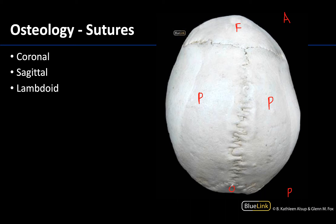Now where these bones meet, you will have joints, and these joints are referred to as sutures. The first suture we will discuss is the coronal suture, which is sometimes referred to as the frontal suture. It's going to be the meeting point between the frontal bone and the paired parietal bones. Here's your coronal suture — think of it as kind of where a tiara would sit on your head. The suture running down the midline will be the sagittal suture, and it's going to be between the paired parietal bones.